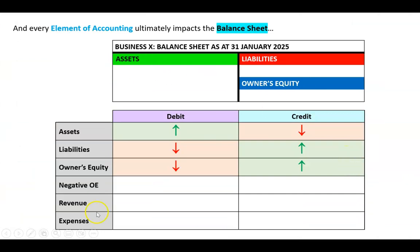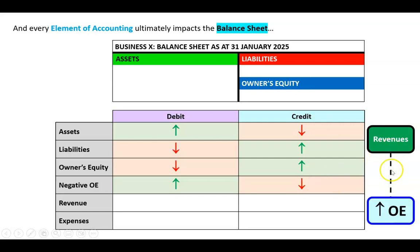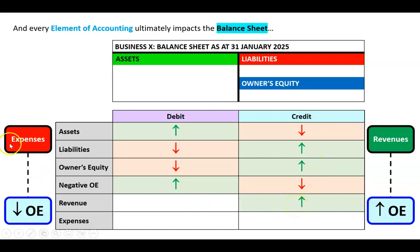We also need rules for negative owner's equity. If owner's equity goes up on the credit side, then negative owner's equity must go up on the debit side and go down on the credit side. For revenues — the definition of revenue is that it increases owner's equity — so revenues go up on the credit side and go down on the debit side. Expenses decrease owner's equity, so expenses go up on the debit side and go down on the credit side.